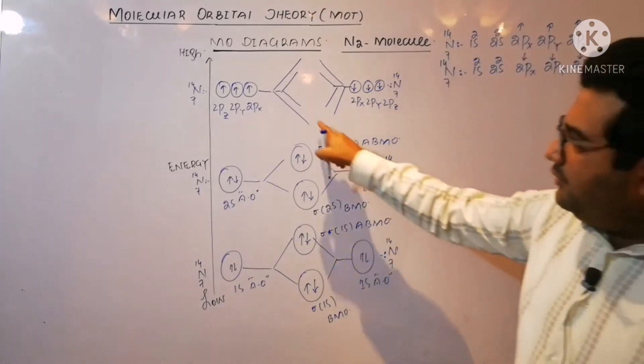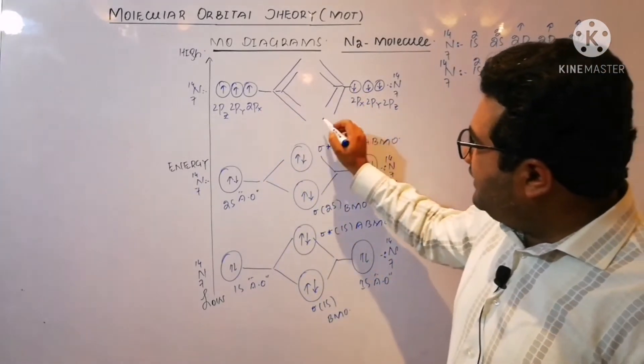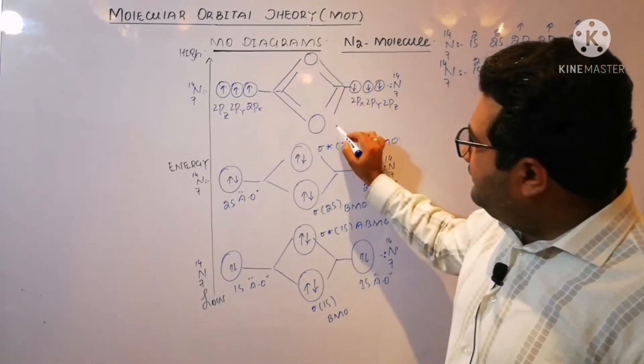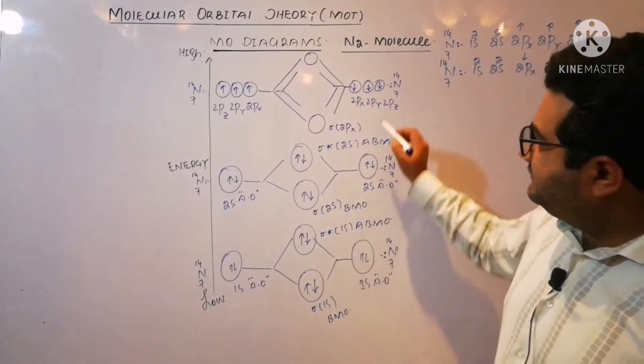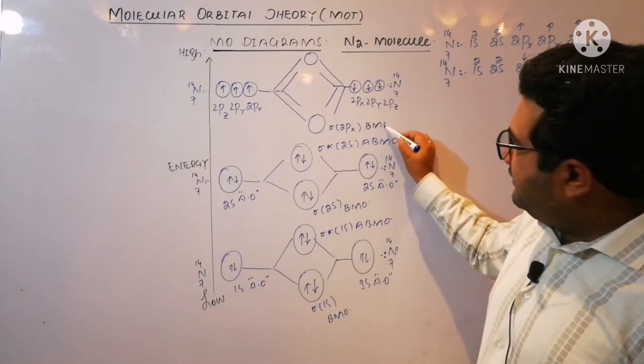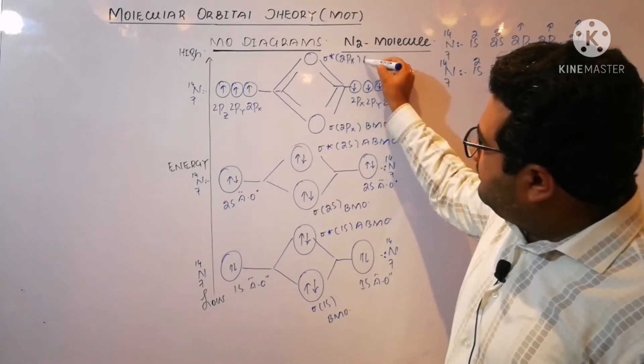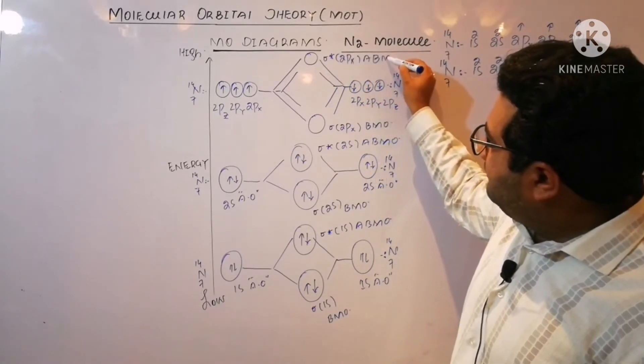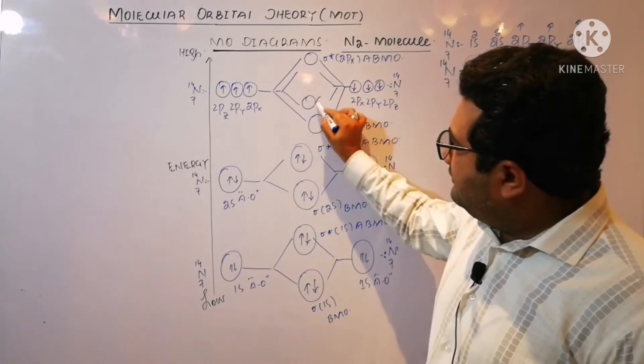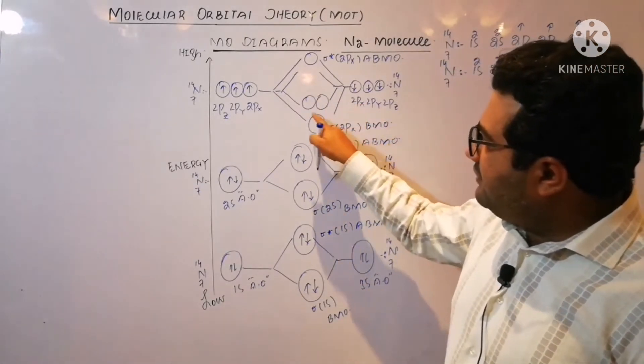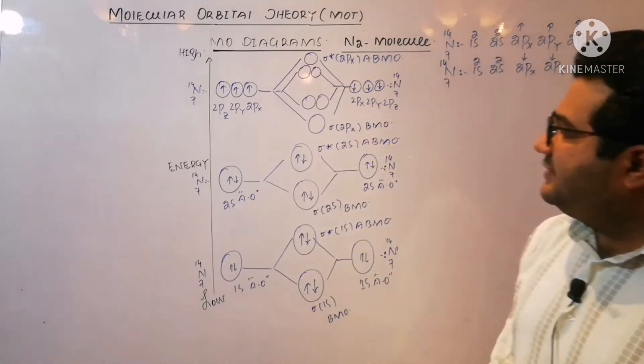Here it is very important to keep in mind that when 2px will overlap with 2px, two molecular orbitals will form. One will be sigma 2px bonding molecular orbital, the other will be sigma star 2px anti-bonding molecular orbital. 2py with 2py will form sigma 2py and sigma 2pz. Similarly, sigma star 2py and sigma star 2pz.